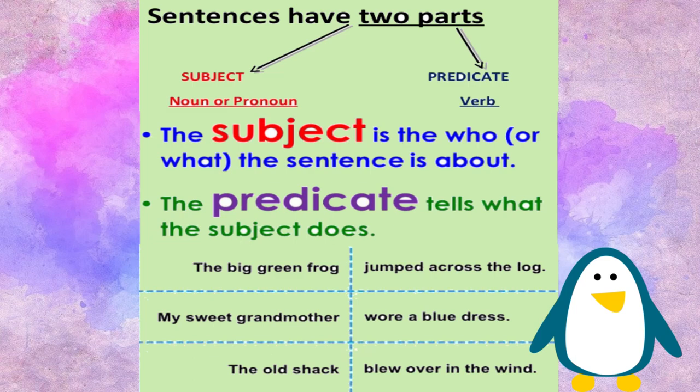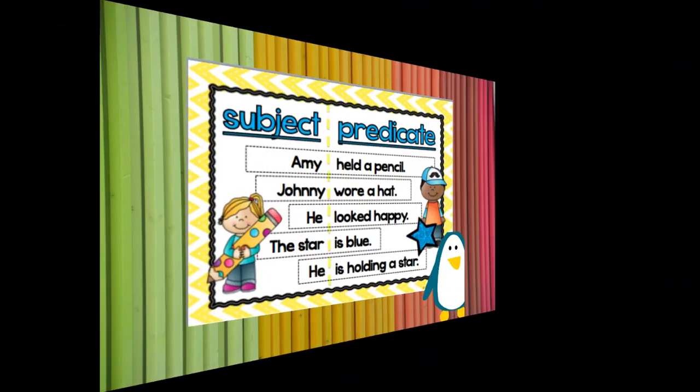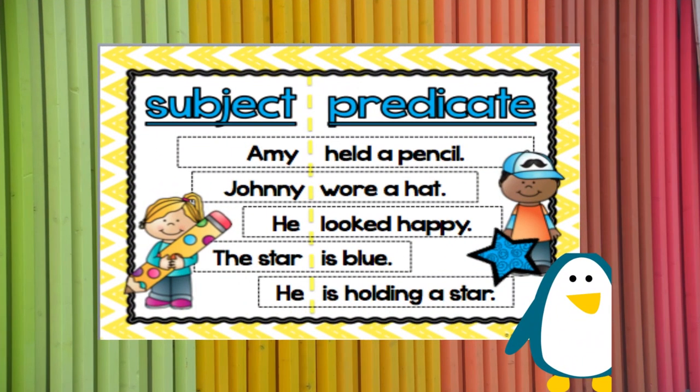Let's keep moving. Here are a few more sentence examples using subject and predicate. Amy held a pencil. Amy is the subject. Held a pencil is the predicate.